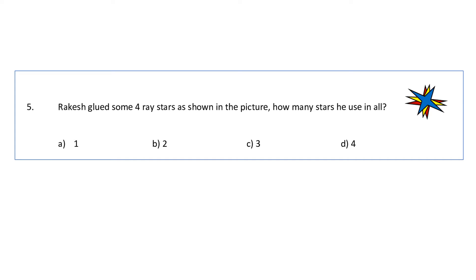5th question: Rakesh glued some 4-ray stars as shown in the picture. How many stars has he used in all? We can see he has used 3 stars - one is red, one is yellow, one is blue. So he totally glued 3 four-ray stars. The answer will be C, 3.